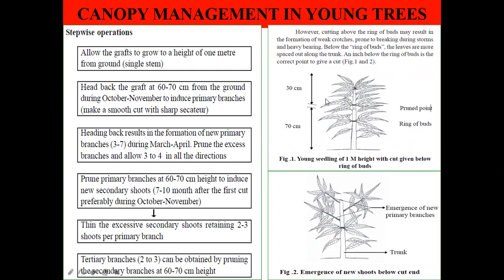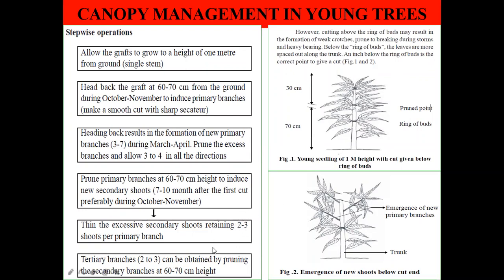After keeping three to four primary branches, prune the primary branches again at 60 to 70 centimeters, similarly as before, seven to ten months after the first cut — preferably during October to November. This will allow the growth of new secondary branches. In these secondary branches, keep only two or three and remove excess shoots. So the structure progresses from primary to secondary branches.